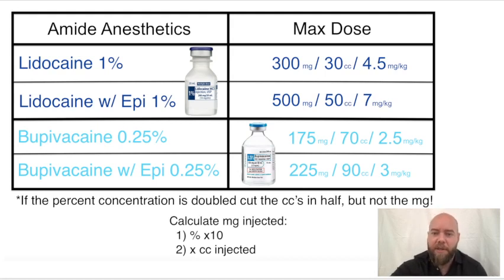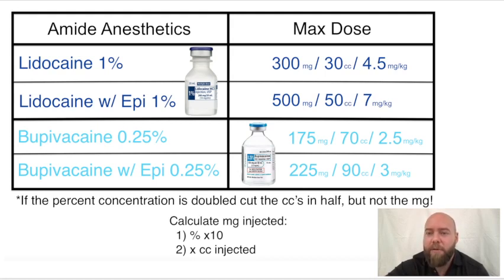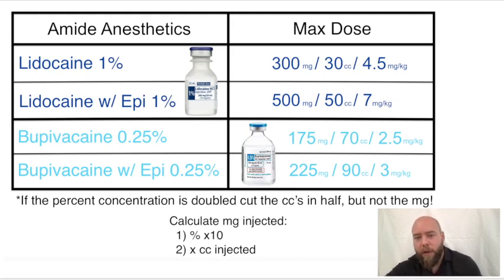If you just memorize the numbers, you don't even have to memorize the units. They might try to trick you and say it's 2% lidocaine — now what? Well, if the percent concentration is doubled from 1% to 2%, you cut the cc's in half, but not the milligrams. That makes sense, because if you double the dosage, you give half the solution. But the milligrams are still the same because it's the concentration that's changed — you're still giving 300 mg as the max dose, but you inject half the volume.